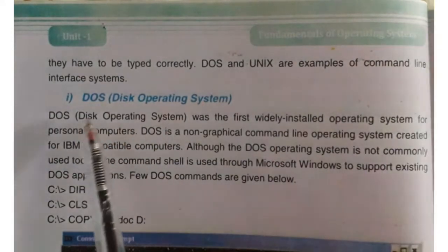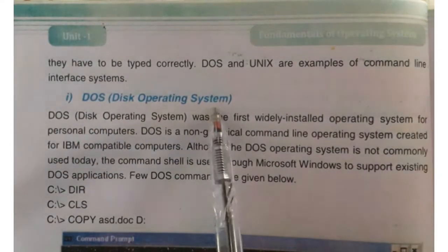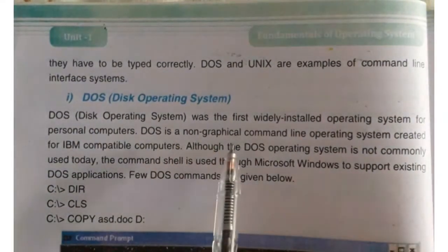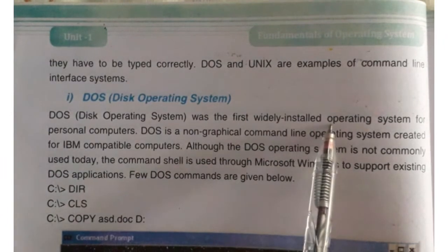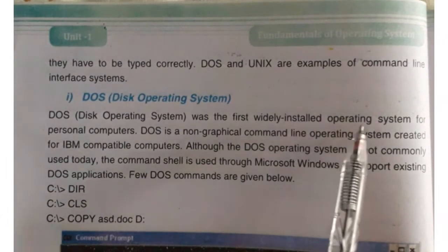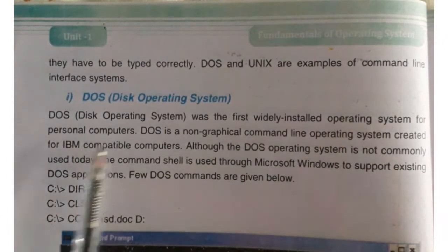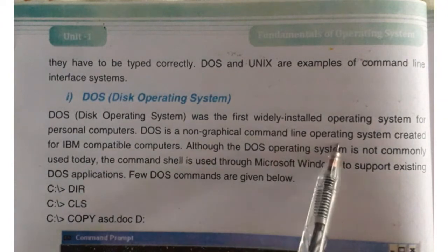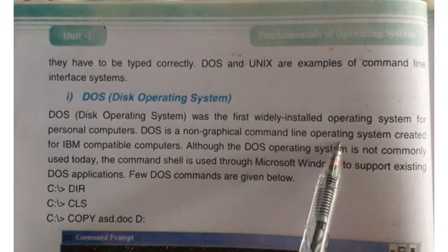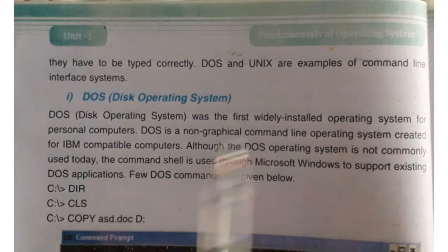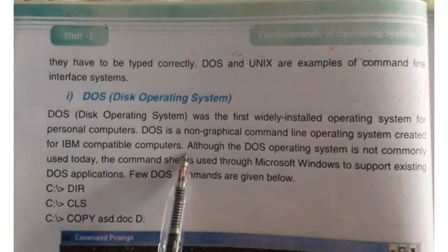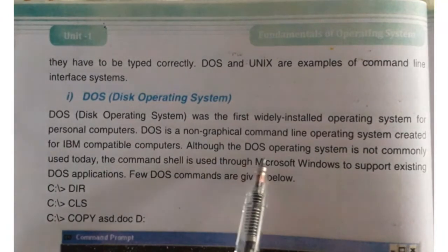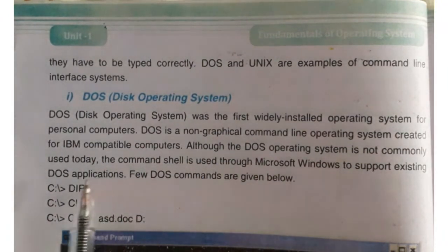DOS and UNIX are examples of command line interface. DOS is the first widely used operating system. It is a non-graphical interface, meaning it has no icons, no menus, no files, and no pointer. That is why it is called a non-graphical user interface.